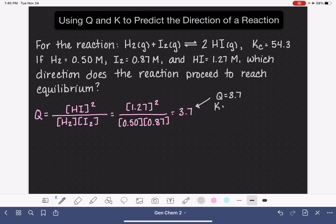So Q is 3.7. K for this is 54.3. And because Q is not equal to K, the system is not in equilibrium, which we already expected based on the wording of the problem.